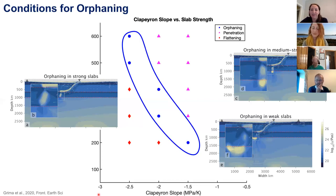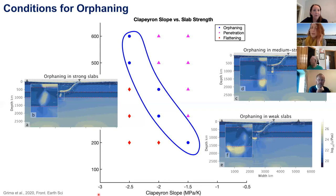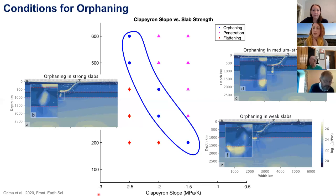Yuri Tamama asked: is it possible for the orphaned slab part that broke off to melt in the mantle, leaving just the flattened part and making it look like simple flattening rather than orphaning? It takes quite a long time for slab material to become assimilated within the mantle — something like 300 million years. So maybe for older slabs that orphaned long ago, yes, but not for the slab fragments we see in the uppermost lower mantle.